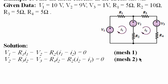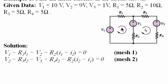Now to write the second equation for mesh two, we start from this point and write: plus V2, minus R3 multiplied by I2, minus V3, minus R4 multiplied by I2, minus R2 multiplied by (I2 minus I1). Notice that in this loop we say I2 minus I1, whereas in mesh one we said I1 minus I2.